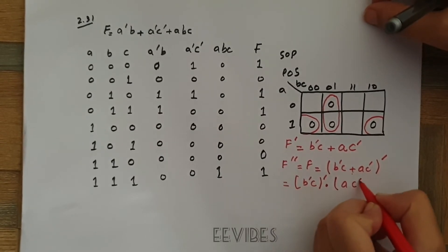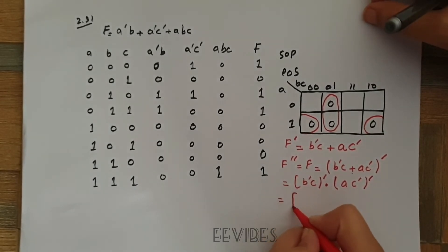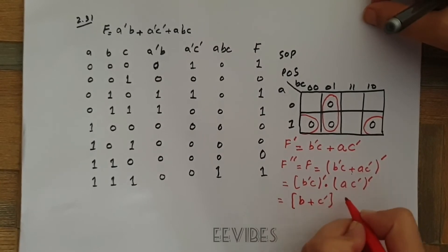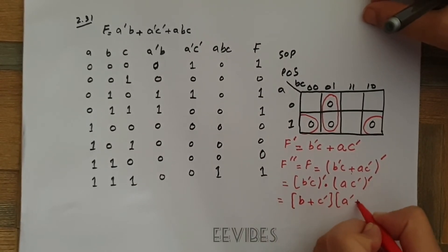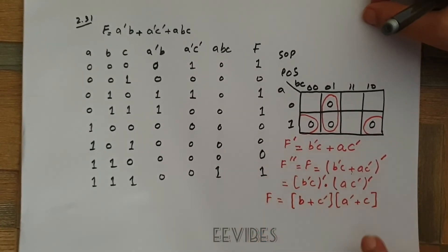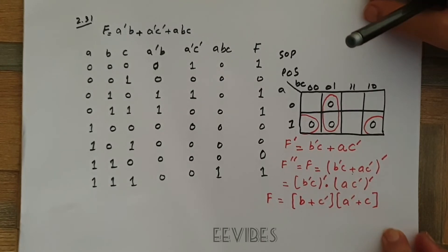Then you can write the second term and take the complement of it. Just expand it now and you can see b plus c complement and then a complement plus c. So in this way you have represented this function as the product of sums which is actually the standard form of the function.